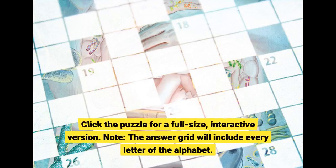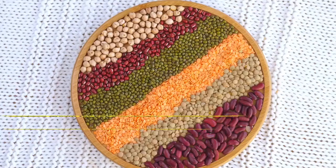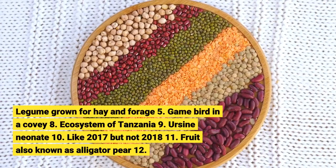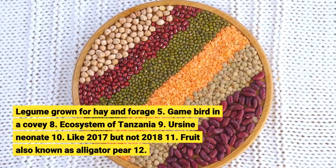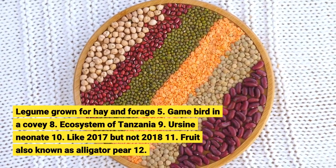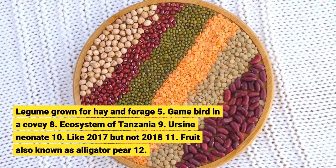Click the puzzle for a full-size interactive version. Note: the answer grid will include every letter of the alphabet. Across: 5 — legume grown for hay and forage; 8 — game bird in a covey; 9 — ecosystem of Tanzania; 10 — ursine neonate; 11 — like 2017 but not 2018; 12 — fruit also known as alligator pear.